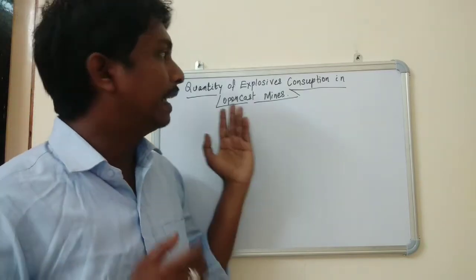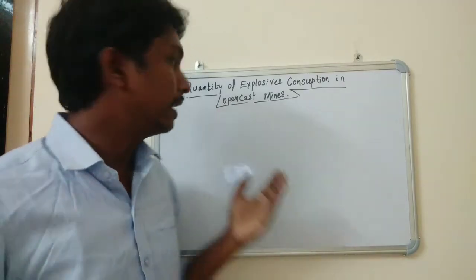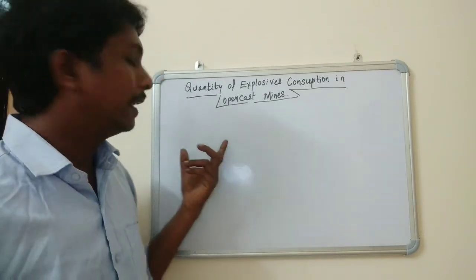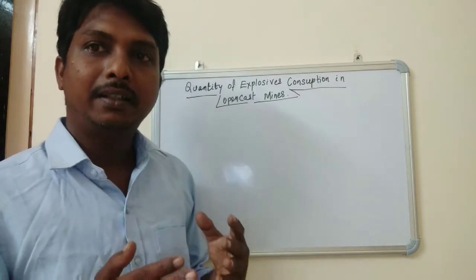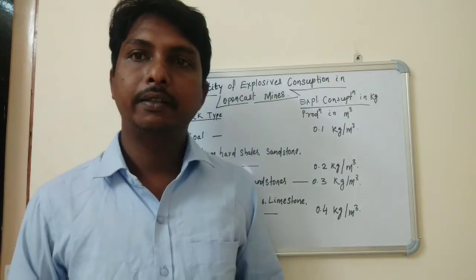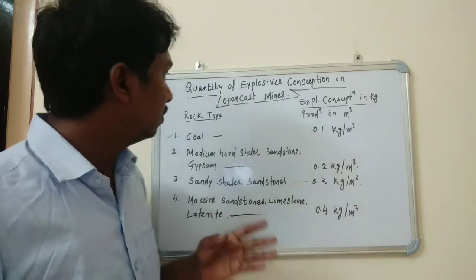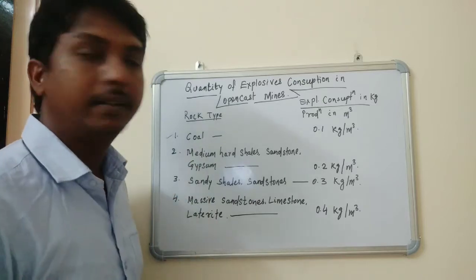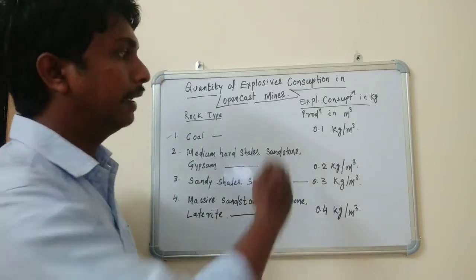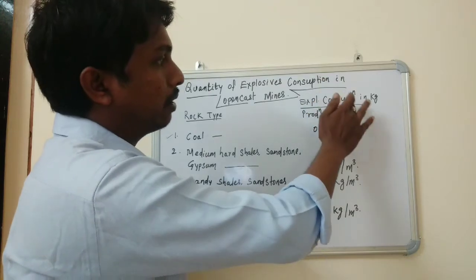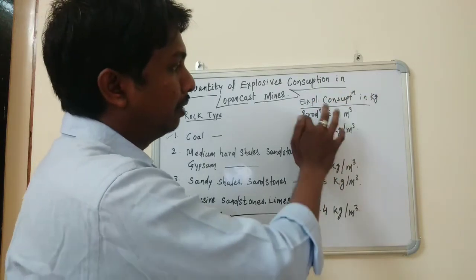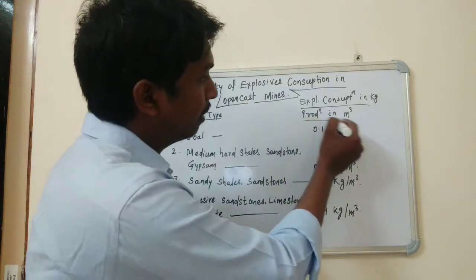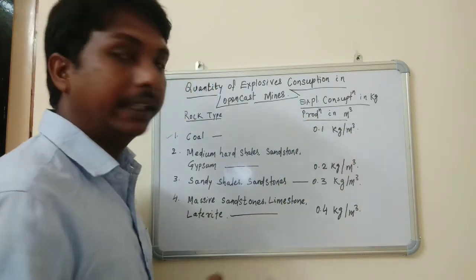Different rock types require different quantities of explosives because in metal mines, the properties of materials vary. I will give you data on the left side showing the rock type and the right side showing explosive consumption in kg per cubic meter of production.